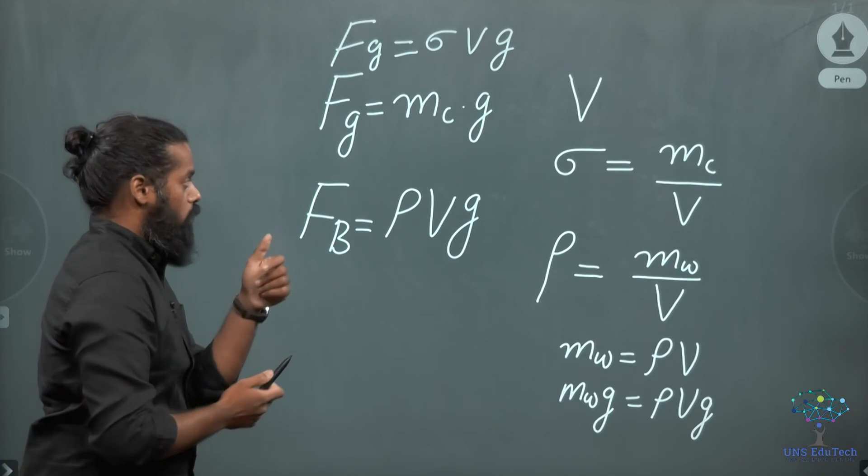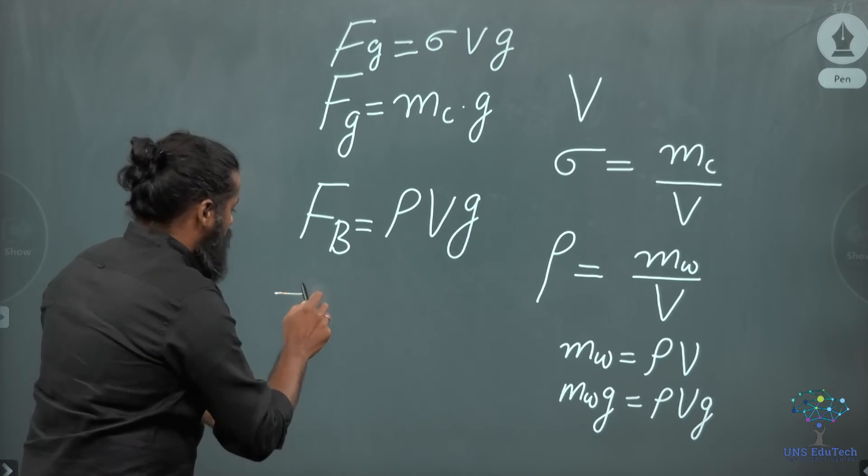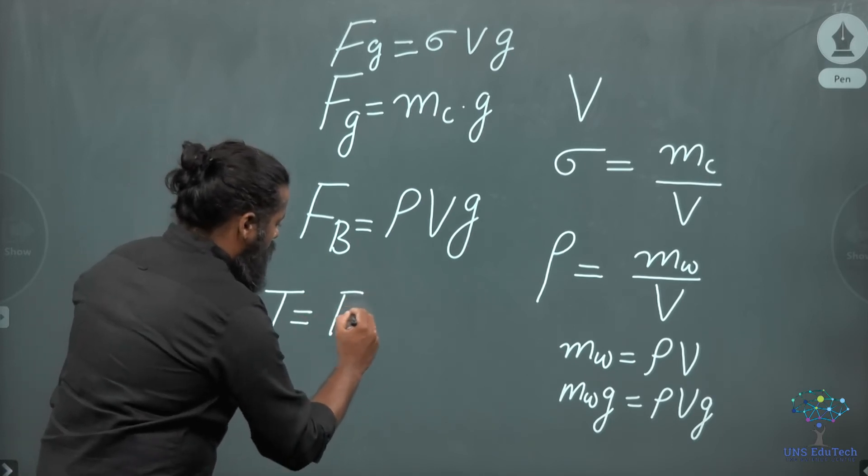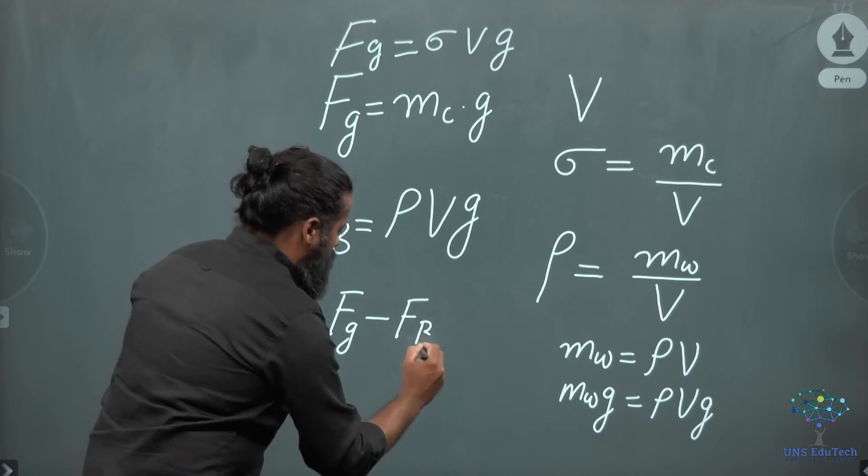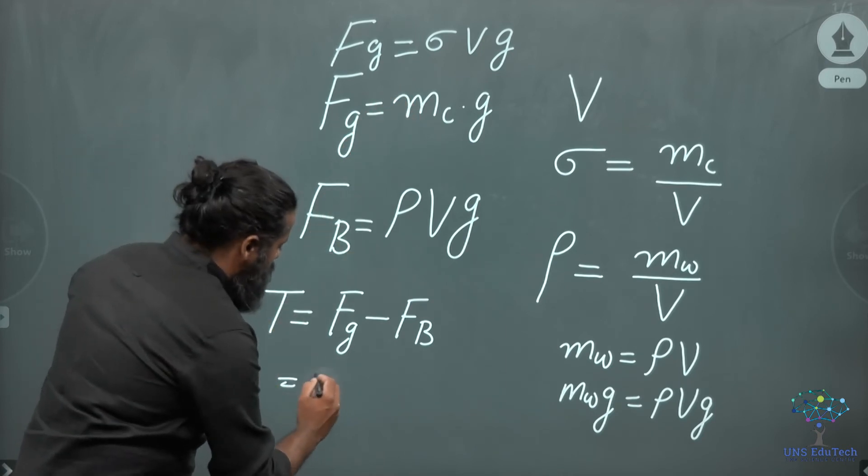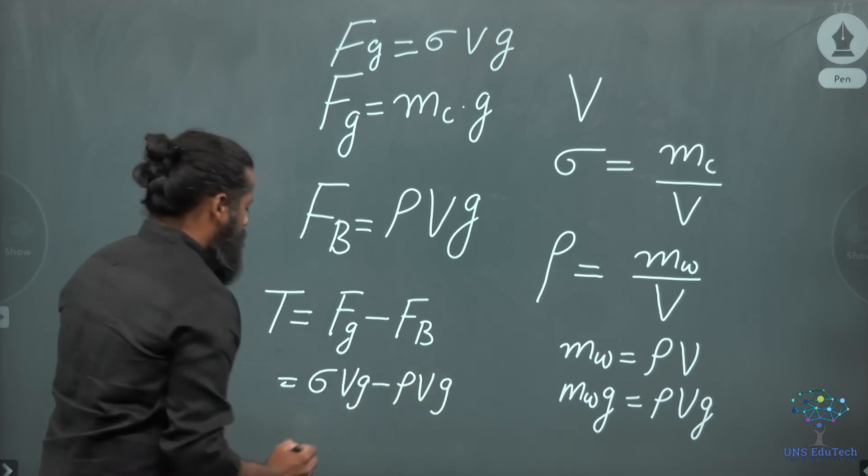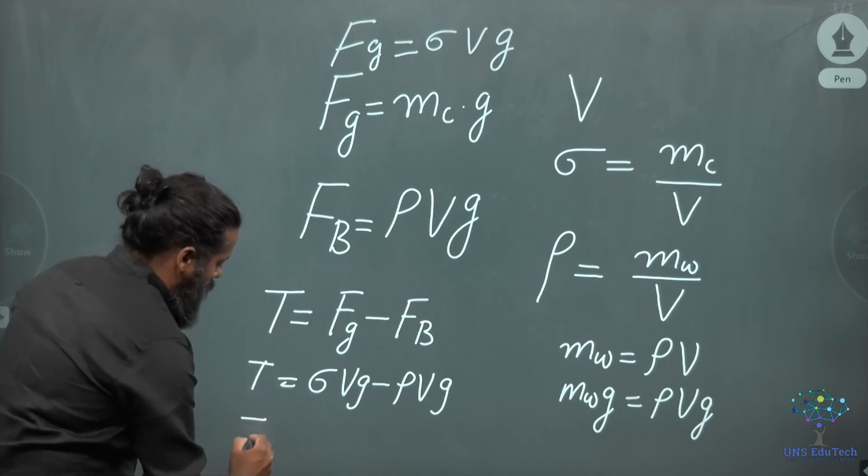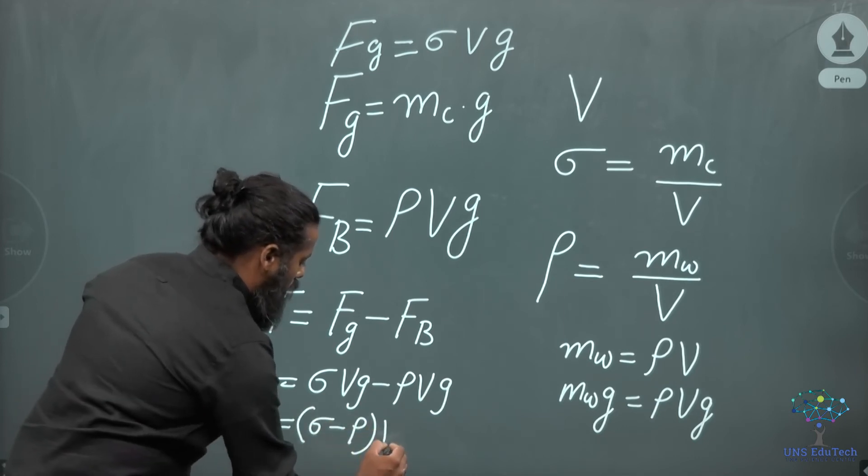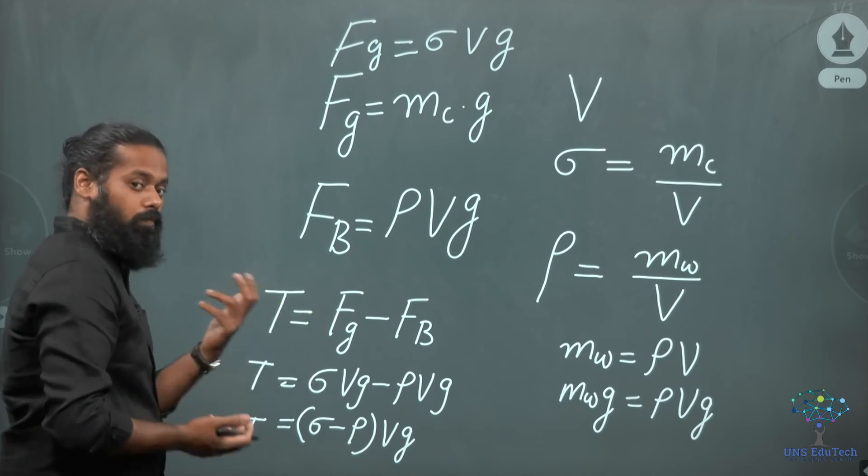Now the net tension we can find out because downward FG is acting and FB is acting in the opposite direction. So net force will be equal to, or the tension on the string will be equal to, we can take the difference of these two quantities, will be equal to F gravity minus F buoyancy. That will be equal to F gravity is sigma times V times G, sigma VG minus rho VG. You can say the net force acting will be equal to, the net tension on the string will be equal to, sigma minus rho times volume of that cork into acceleration due to gravity.